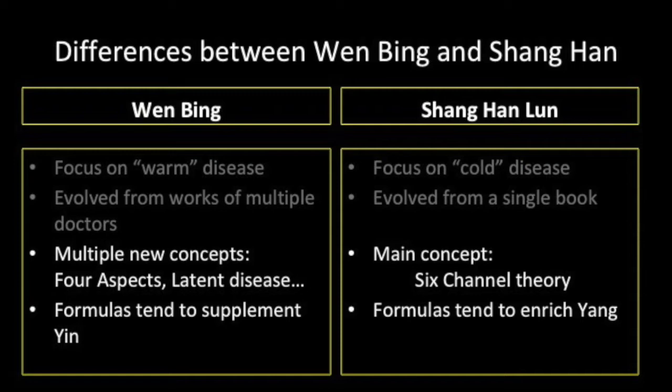Also, as Shang Han Lun developed in a period of great hardship, the formulas proposed focus on enriching the yang. Wenbing developed in a period of economic prosperity, and its formulas focus more on supplementing yin.